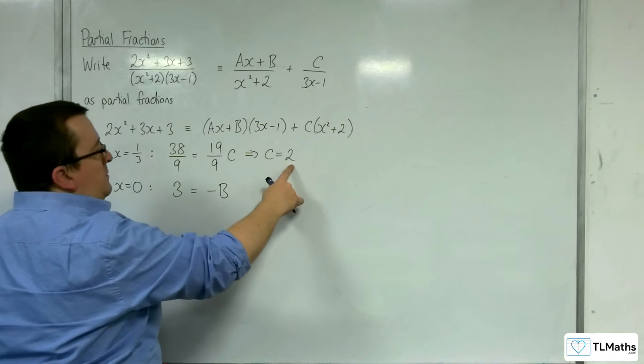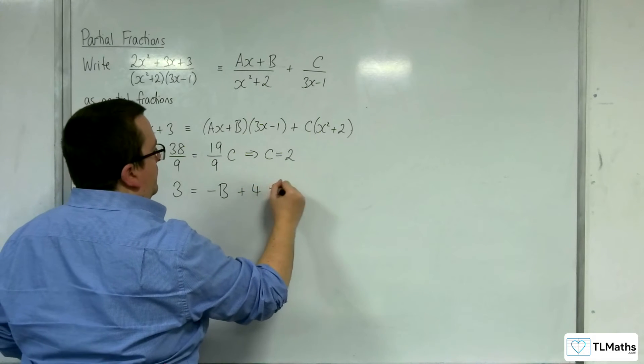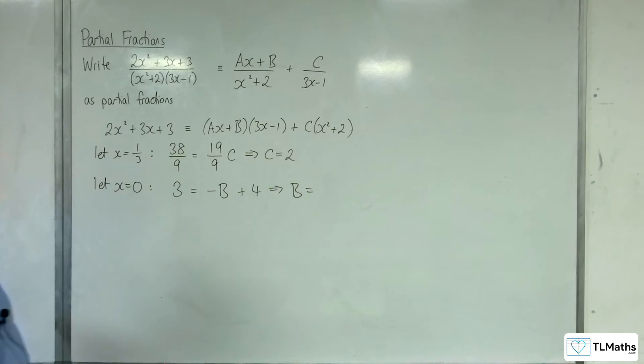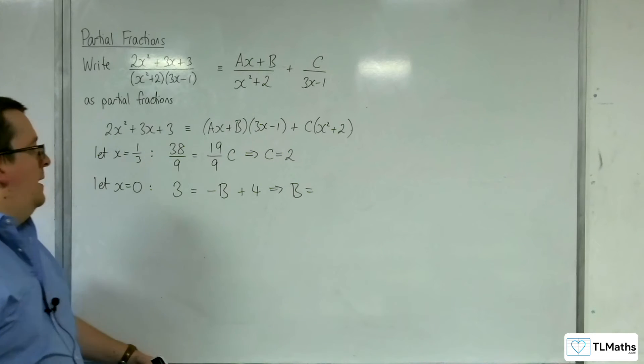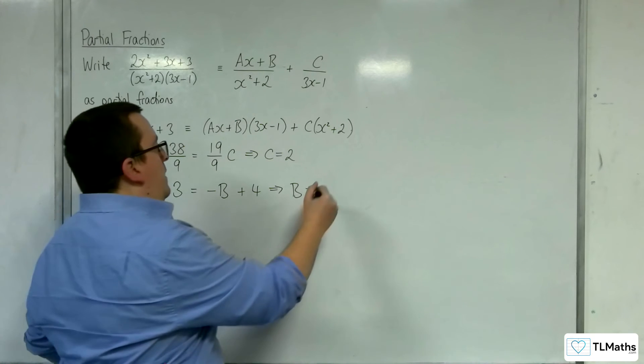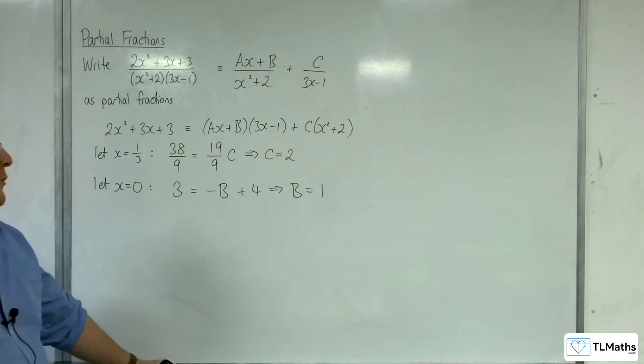So 2 times 2 is 4. So that means that b would have to be 1. Minus 1 plus 4 is 3. So we've got b.